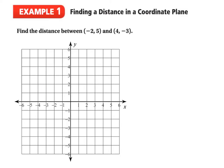In our first example, we want to find the distance between two points in a coordinate plane — finding the distance between negative 2, 5 and 4, negative 3. The first thing we want to do is plot the two points on our graph. So, negative 2, 5 is here, and 4, negative 3 is here. Now we can form a right-angled triangle, and the distance between our two points is the hypotenuse of this right-angled triangle.